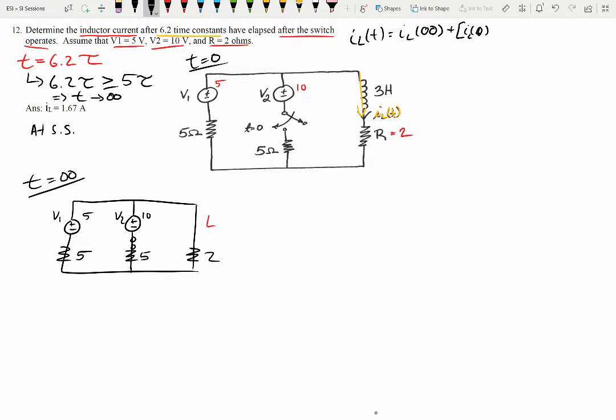So it kind of points you towards I L of T is I of L infinity plus I of L initial minus I of L at infinity, E to the minus T over tau.